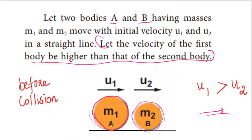Let us consider two bodies, one body A and another body B. They have masses M1 and M2 respectively. Body A has mass M1, body B has mass M2. They move with velocities U1 and U2. The bodies are moving in a straight line. One special condition: the velocity of the first body U1 is higher than the velocity of the second body U2, so they tend to have a collision.